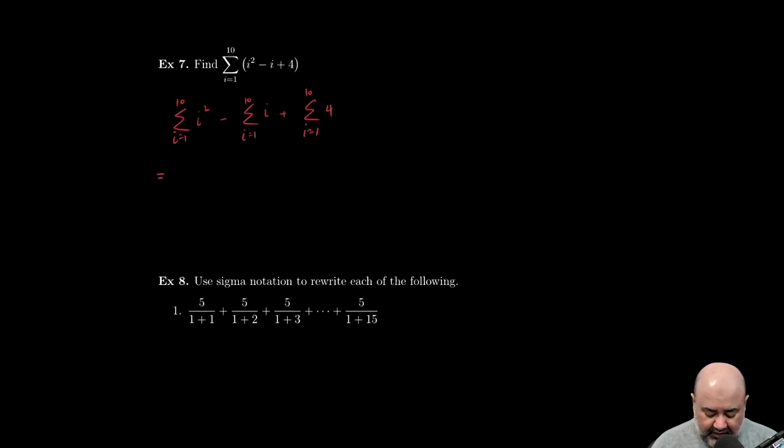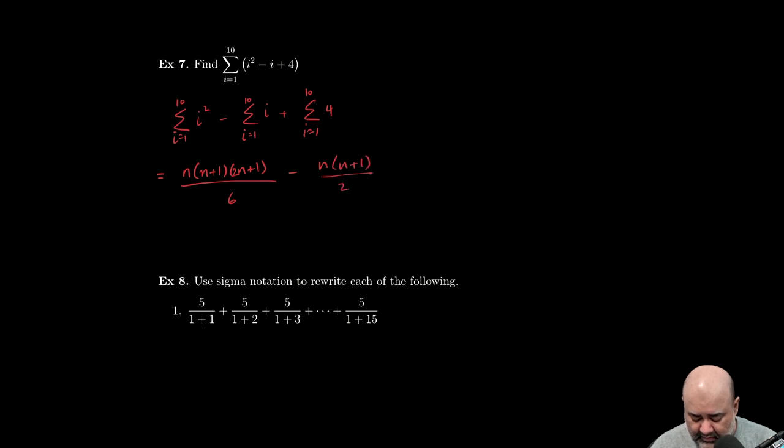This will be for the i² term: n(n+1)(2n+1)/6 minus for the i term: n(n+1)/2 plus for the constant: 4n. This expression is being evaluated for n equals 10. I always write down the formulas and then figure out what my n value is going to be.